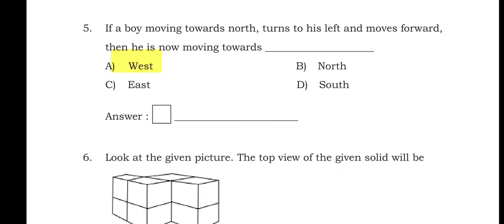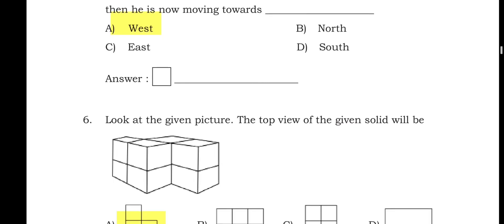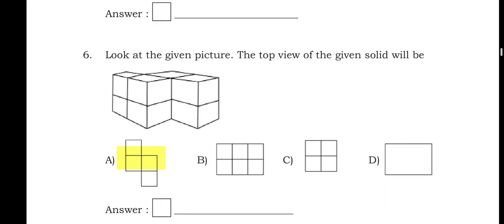Question 5: if a boy moving towards north turns to his left and moves forward, then he is moving towards — the west direction. Option A is the right answer.